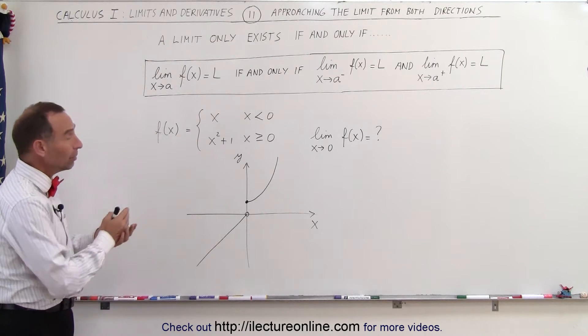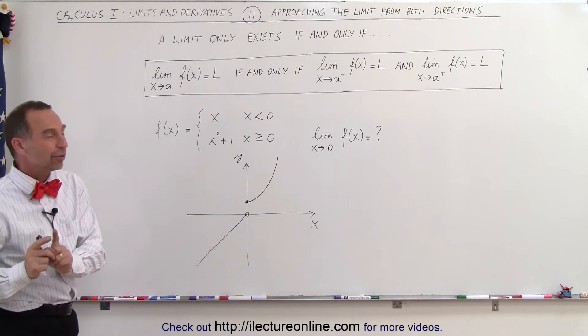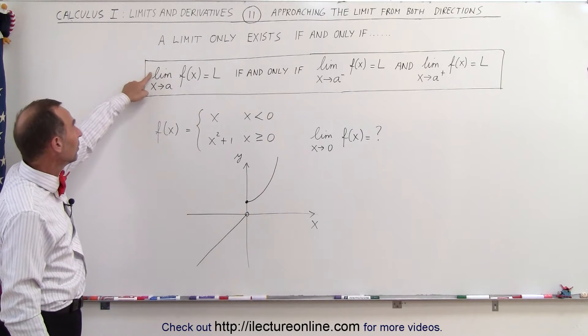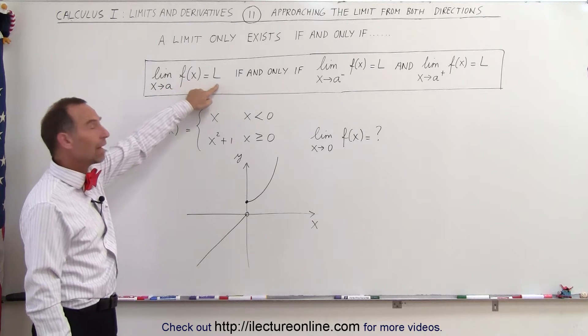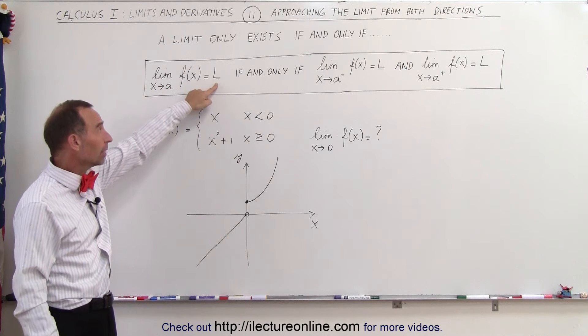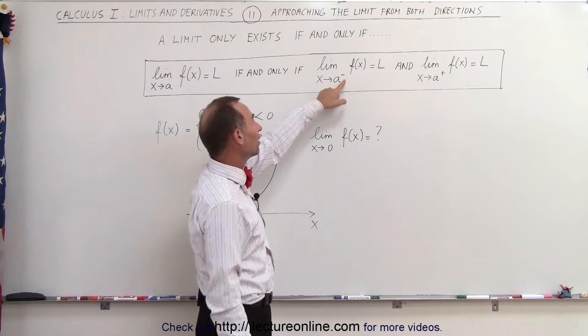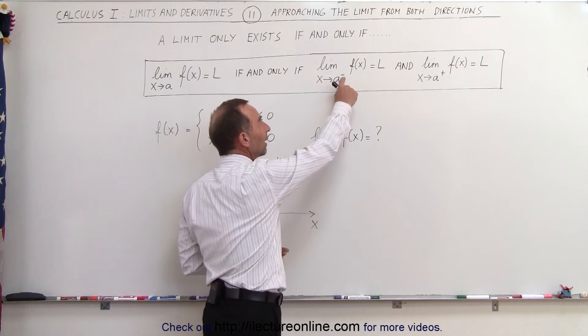A limit of a function only exists if and only if the following condition. So mathematically we'll write that this follows. The limit as x approaches a of some function of x will equal L, L being a limit, if and only if the limit can be found by approaching the value from the left. That's what that little minus sign means.